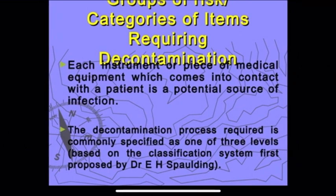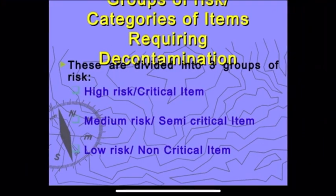The next topic is the categories of items requiring decontamination. Each instrument or piece of medical equipment that comes into contact with the patient is a potential source of infection. The decontamination process required is commonly specified as one of three levels, based on the classification system first proposed by Dr. E.H. Spalding.